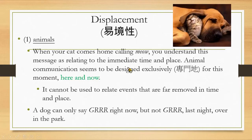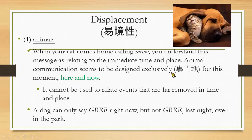Animal communication seems to be designed exclusively for this moment — here and now. It cannot be used to relate events that are far removed in time and place. So a dog can only say 'girl right now,' but not 'girl last night over the park.'